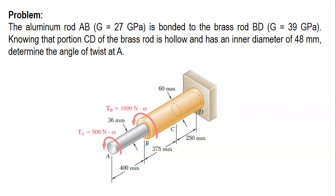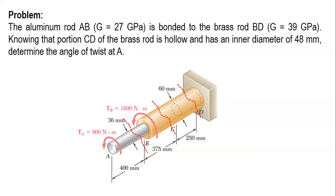What we will do is determine the internal resisting torque of each segment — segment AB, segment BC, and segment CD. We will cut a section at each segment and get the resisting torque. Then we will check whether they act in the same direction so that we can add or subtract the angle of twist for each segment.